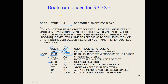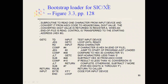The GET_C subroutine is written to read one character from the input device and convert it from ASCII code to a hexadecimal digit value. The converted digit value is returned in register A. When the end of file is read — that is, when the loader has finished reading the entire object program and loading it onto main memory — control is transferred back to the starting address so that the CPU starts executing the program.